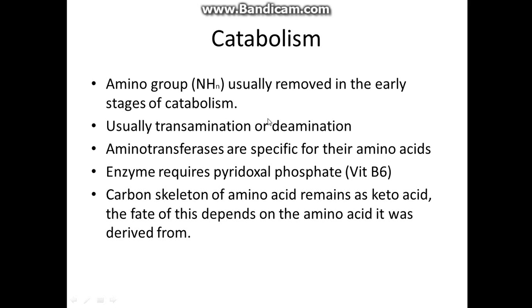Basically, amino acids — the amino group is generally removed in the early stages of catabolism by transamination or deamination. The aminotransferases are specific for their amino acids and require the coenzyme pyridoxyl phosphate, also known as vitamin B6, abbreviated as PLP. The carbon skeleton of an amino acid remains as a keto acid, and the fate of that depends on how the amino acid was derived. Some of these skeletons can break down into different compounds.